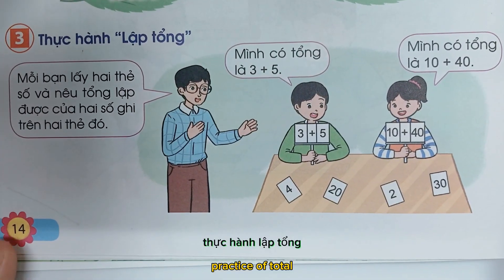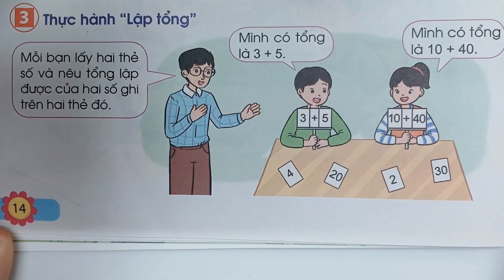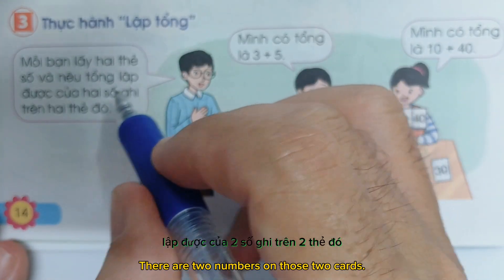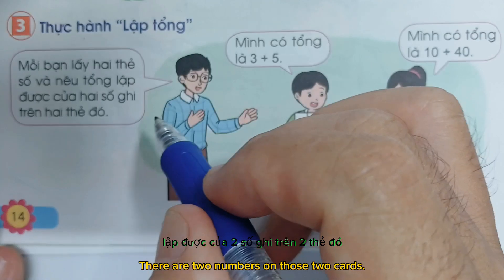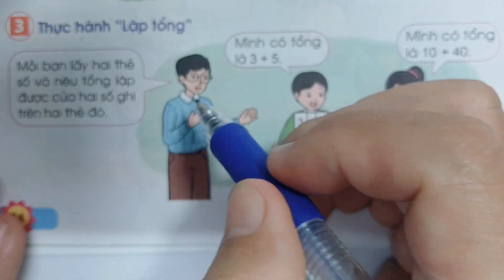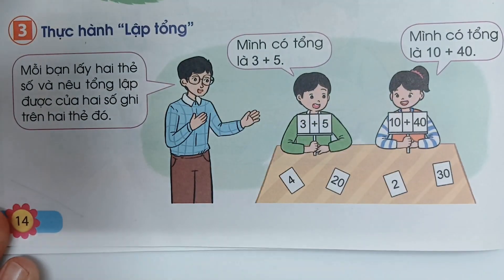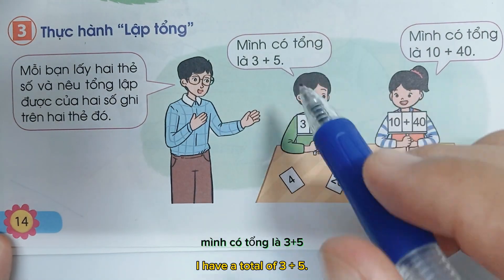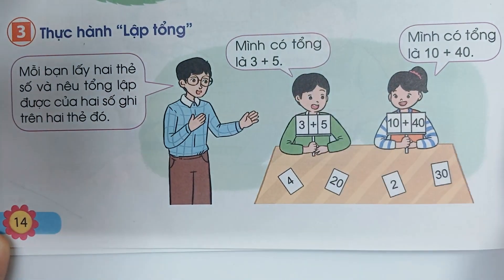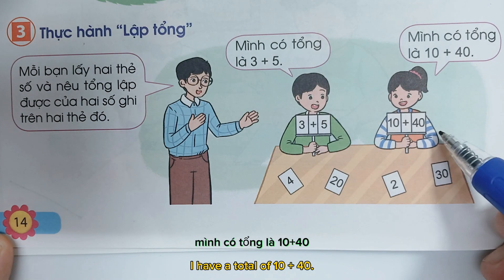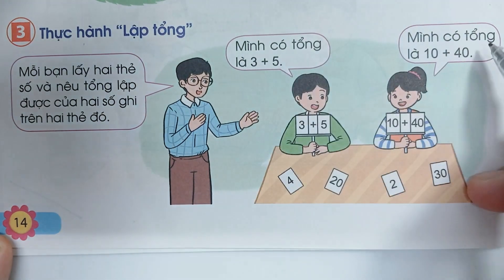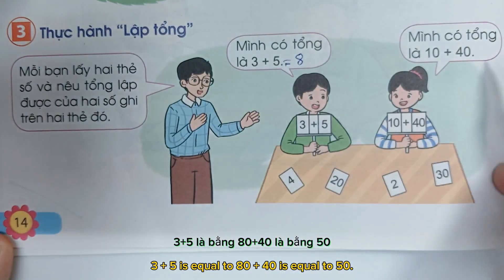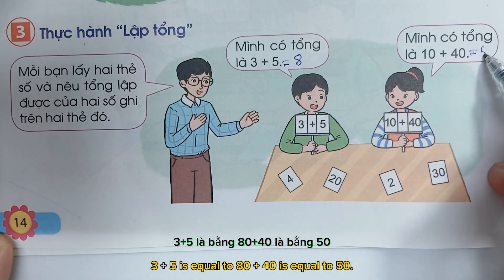Thực hành lập tổng: Mỗi bạn lấy 2 thẻ số và nêu tổng lập được của 2 số ghi trên 2 thẻ đó. Ví dụ: mình có tổng là 3 cộng 5 bằng 8. Mình có tổng là 10 cộng 40 bằng 50.